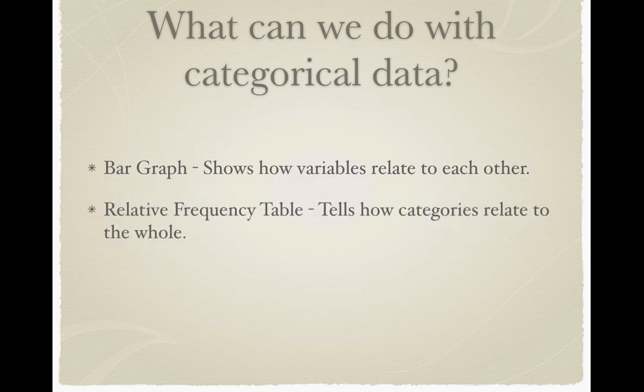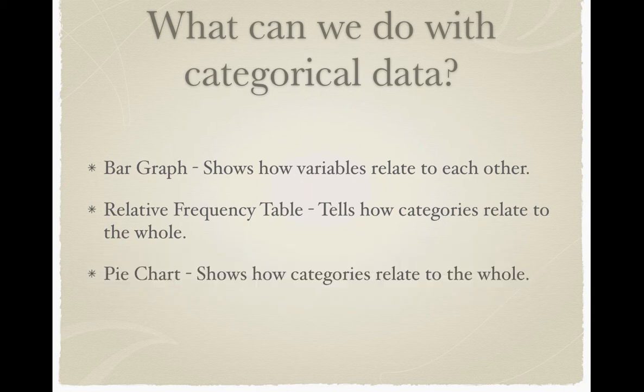Then we have a relative frequency table, which tells how categories relate to the whole — we can see how each category compares to the sample as a whole. And finally, we have a pie chart, which also shows how categories relate to the whole.